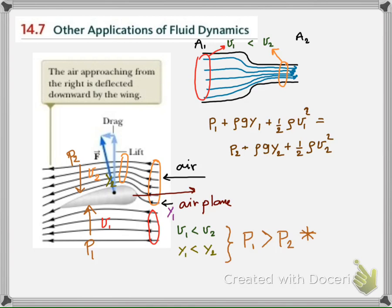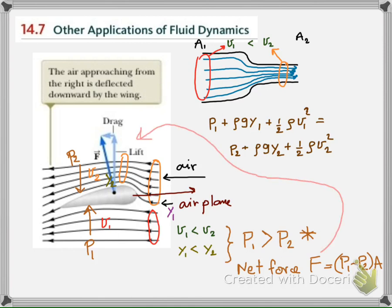In terms of force, the force from the pressure under the wing is larger than the force from the pressure above the wing. So the net force F equals (P1 − P2) times the area of the wing. This force is what we call the lift force — the force that lifts the airplane. The principle behind this is the Bernoulli equation and the continuity equation.